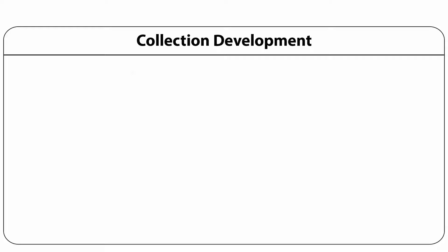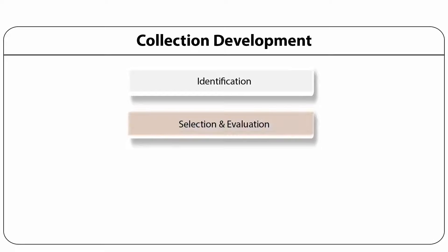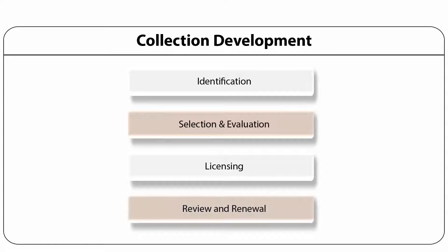In the execution stage, based on the selection criteria defined in the collection development policy, resources will be selected to satisfy user needs and meet the organization mission. Based on usage statistics, a de-selection policy will apply — less used and non-used resources will be removed from the collection. The collection development process is as follows: identification, selection and evaluation, licensing, review and renewal.